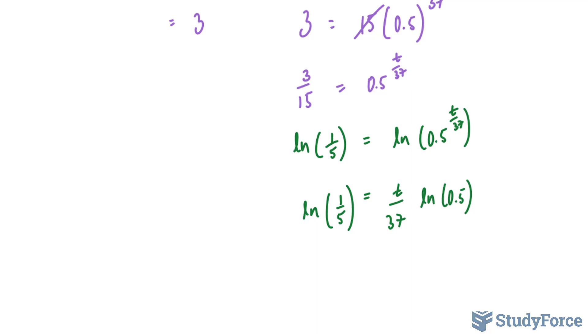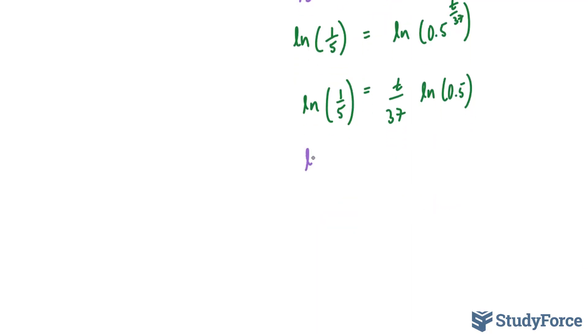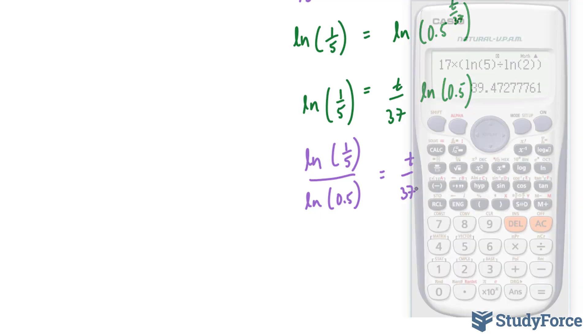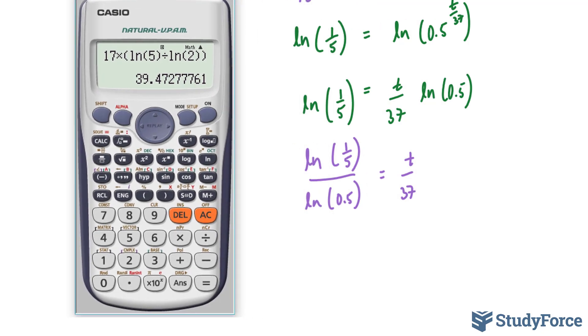I'm now going to divide both sides by ln 0.5. ln 1 over 5 divided by ln of 0.5, and that's equal to t over 37. And just like in one of our previous videos, at this stage, you would multiply both sides by 37. That would give you the time it takes for that matter to decay.